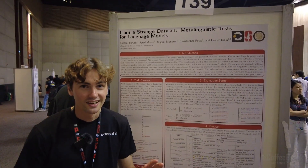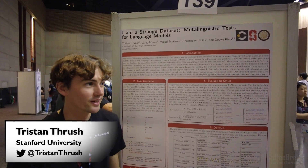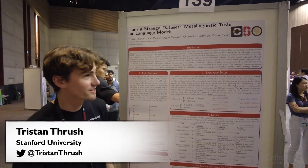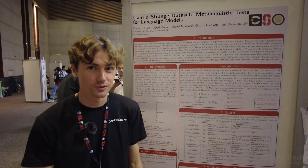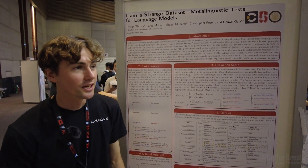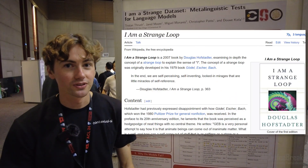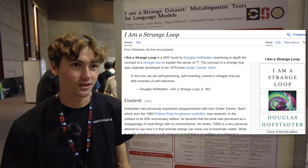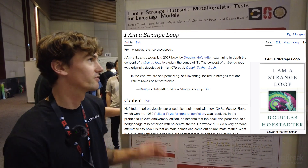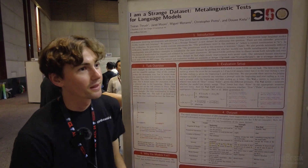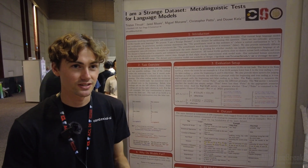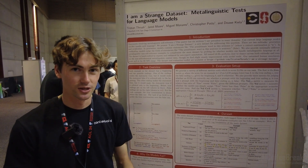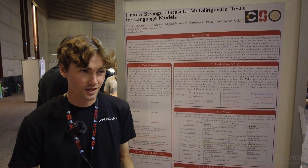Hi, I'm Tristan, and I'm here to talk about a bit of a passion project of mine and some colleagues. It's called 'I Am a Strange Dataset: Meta-Linguistic Tests for Language Models.' If you're familiar with Douglas Hofstadter's book 'I Am a Strange Loop,' it's kind of a play on that. In his book, Hofstadter has a bunch of interesting self-referential sentence examples.